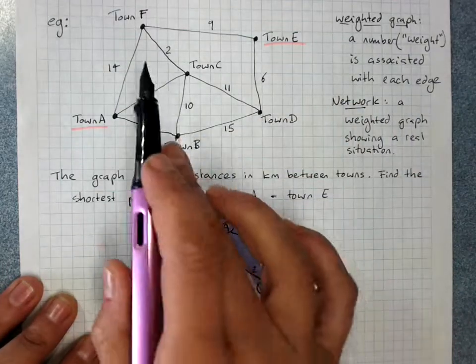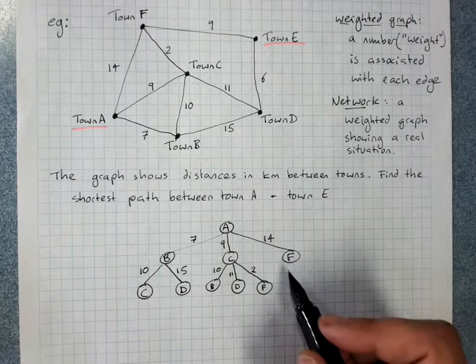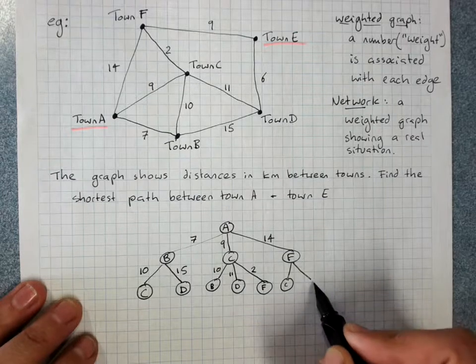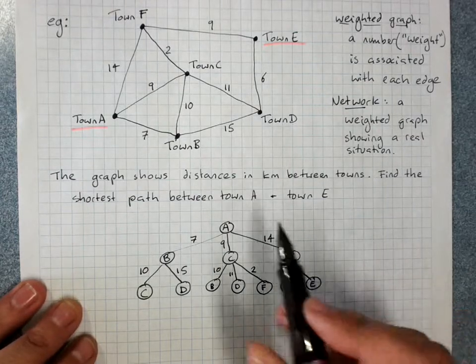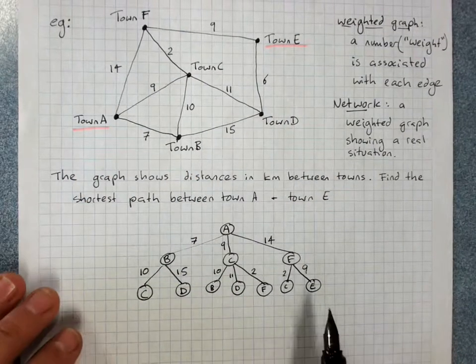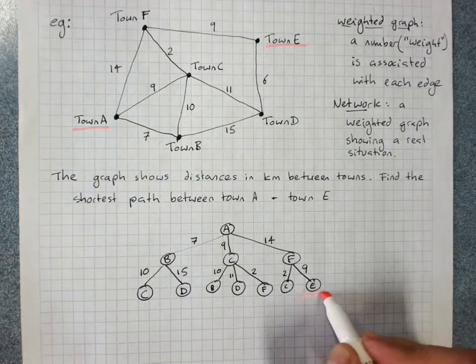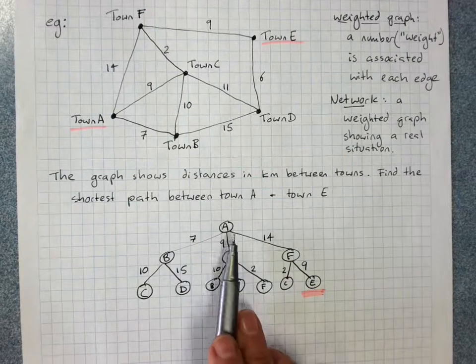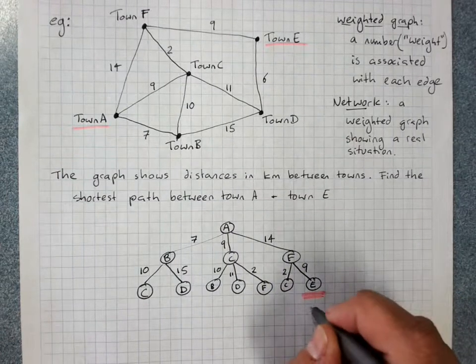Town F, we can go straight to town E. We could go to town C, we'll put it in there. F to E is 9, F to C is 2. Now what that's given us is we've already got one route that gets to E. Add that up: 14 plus 9, 23.